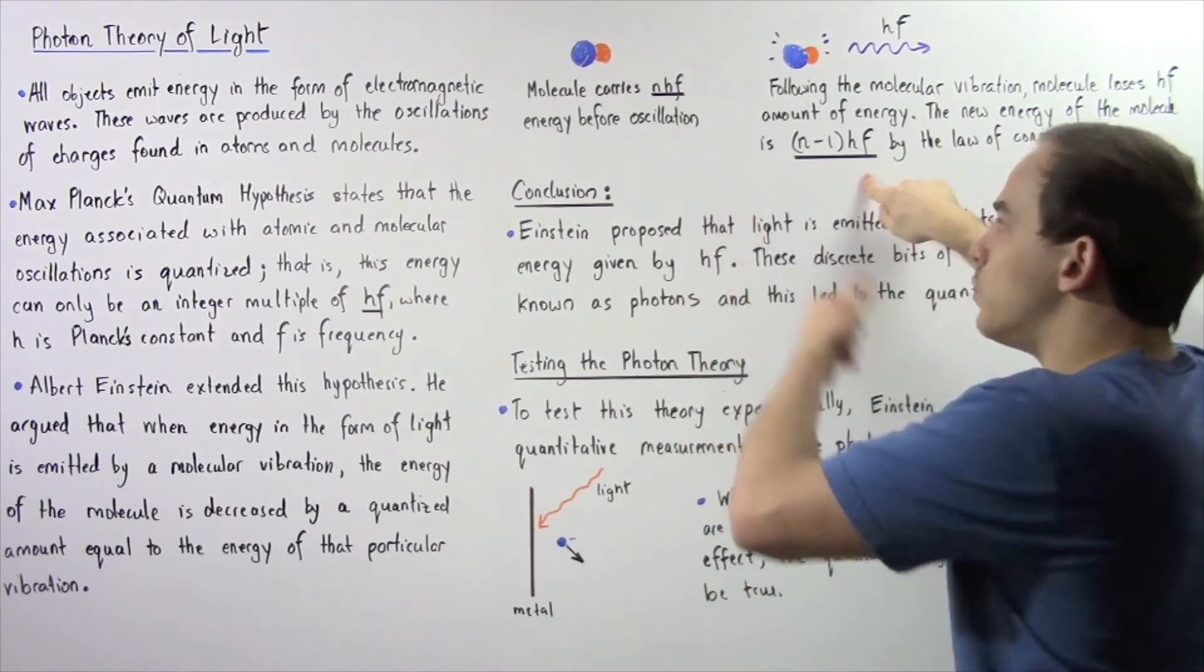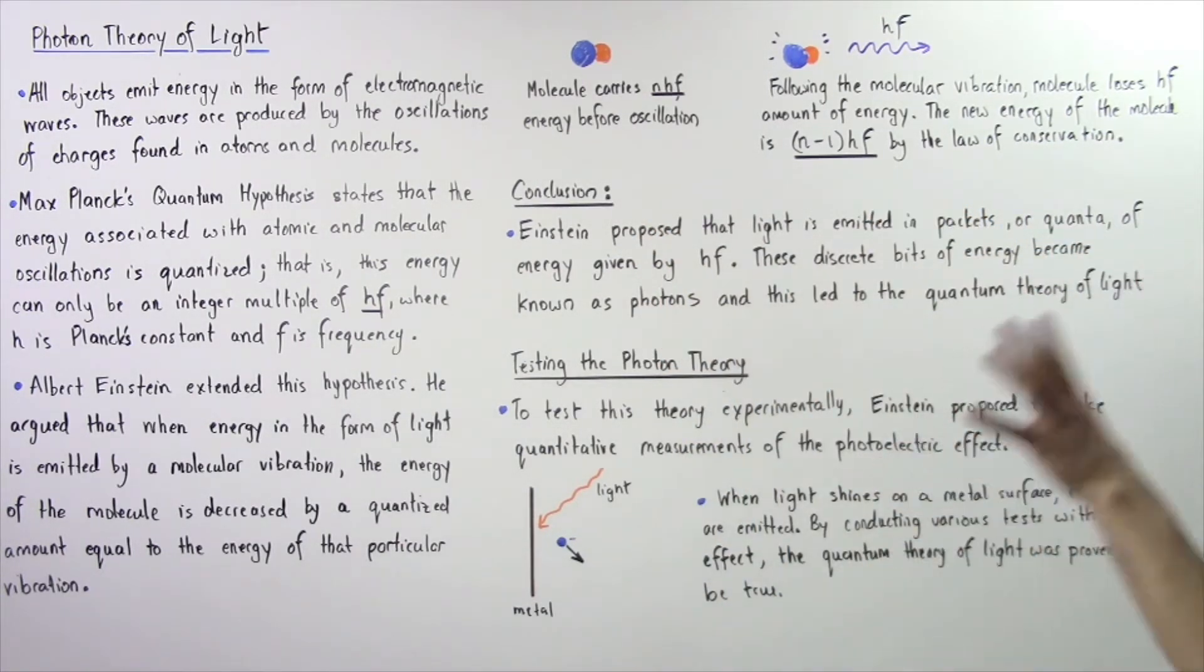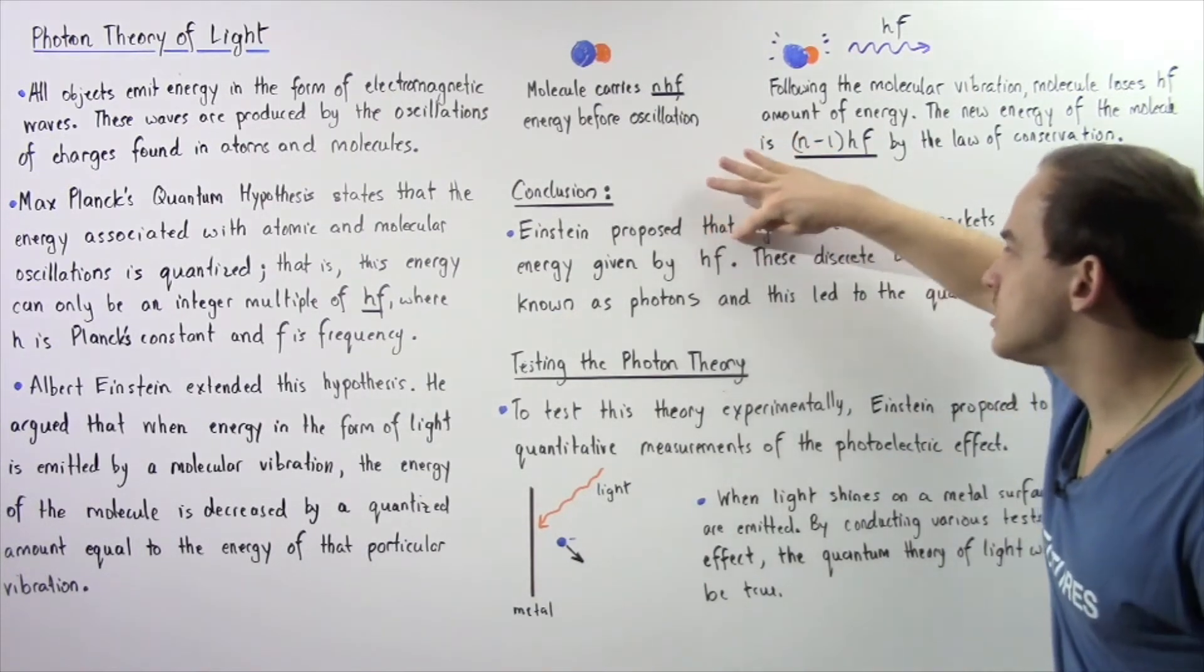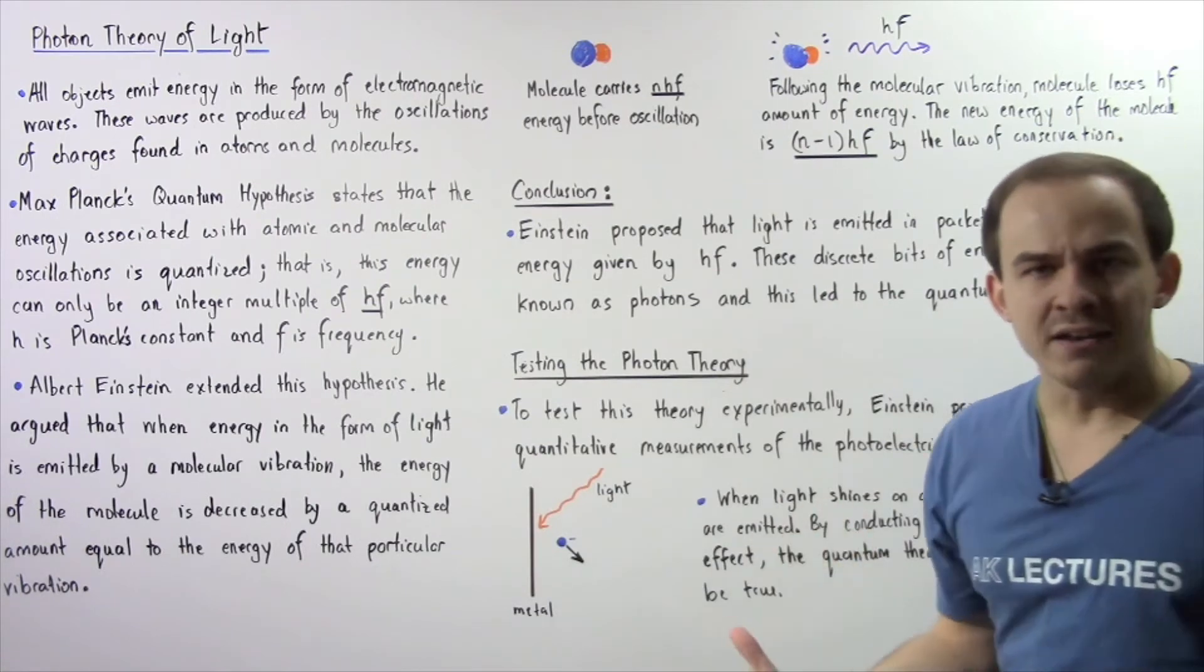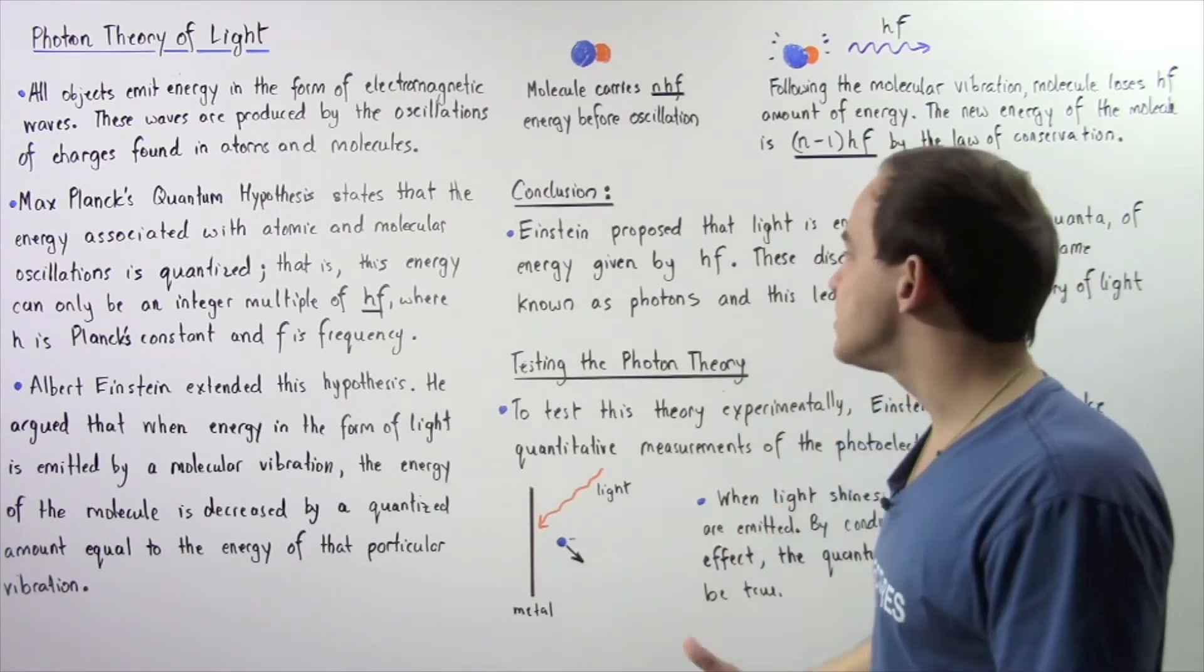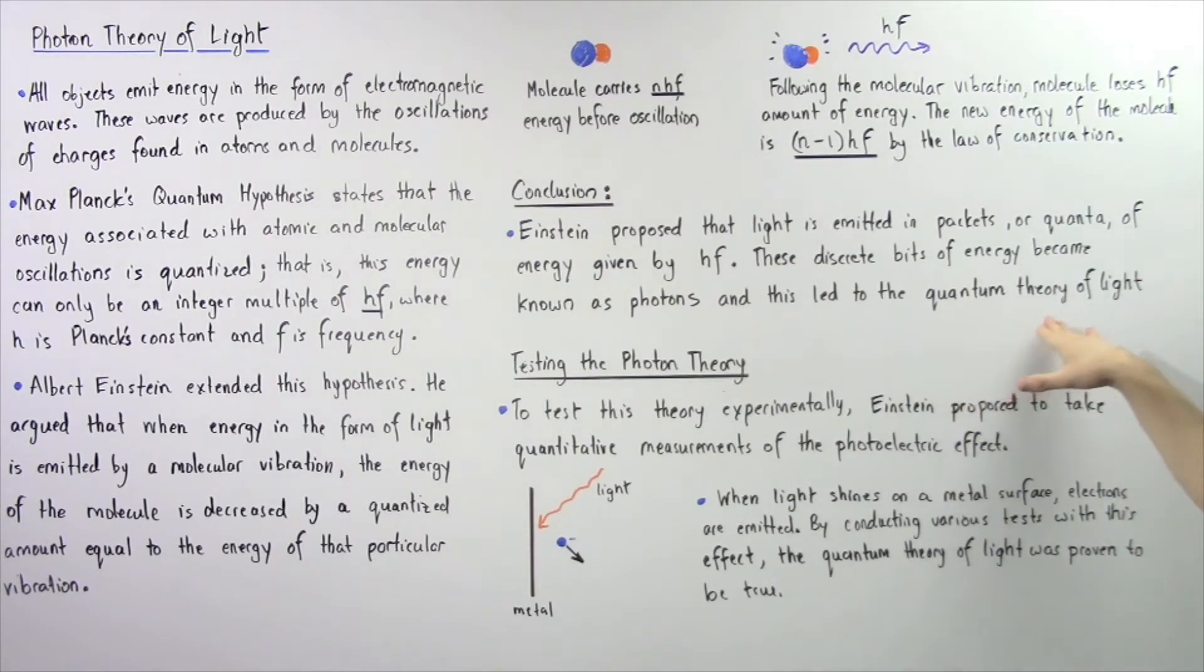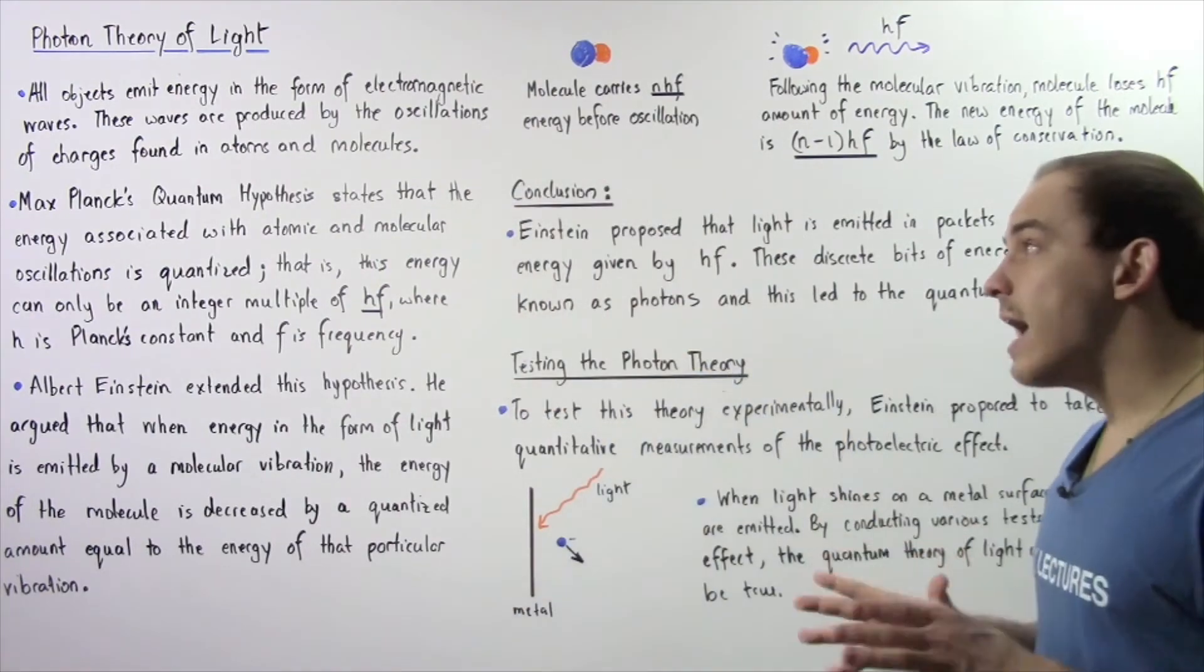By making the following deduction, Albert Einstein concluded the following: Einstein proposed that light is emitted in packets or quanta of energy given by h times f. These discrete bits of energy became known as photons, and this led to the quantum theory of light. It led to the photon theory of light.